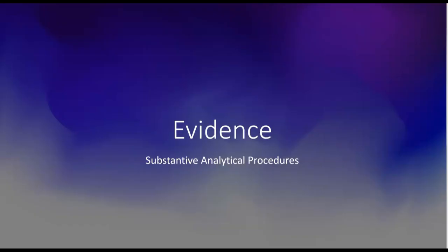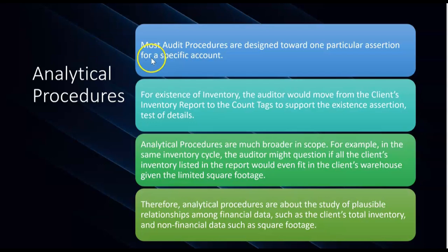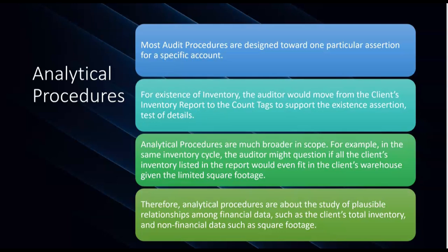In the evidence gathering stage of an audit, the exam will ask you when does the auditor perform substantive analytical procedures. Most audit procedures are designed toward one particular assertion for one specific account. For example, in the inventory cycle, if we wanted to test existence of inventory, the auditor would move from the client's inventory report to the count tags to support the existence assertion — that would be a test of details.